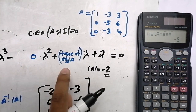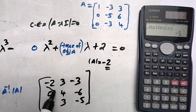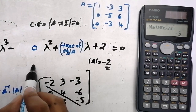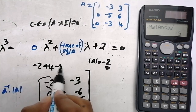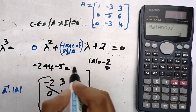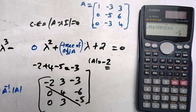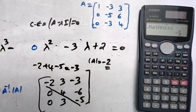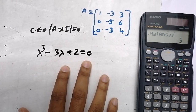We need the trace of the adjoint matrix, which is the sum of the diagonal elements: minus 2 plus 4 plus minus 5. Minus 2 plus 4 is 2, and 2 minus 5 is minus 3. So the coefficient of lambda in the characteristic equation is minus 3. We now have the complete characteristic equation.